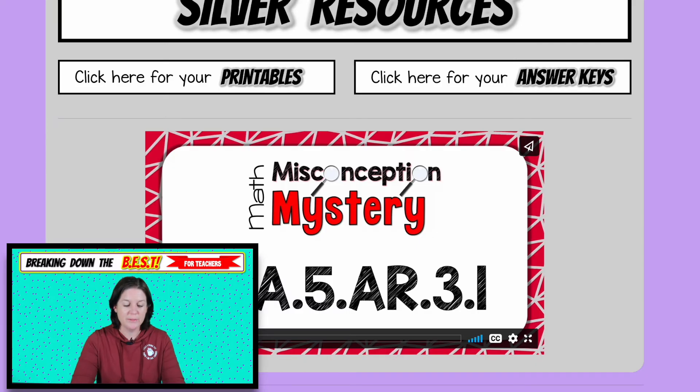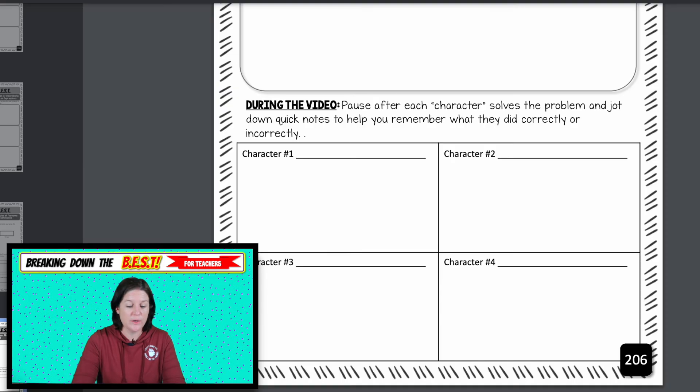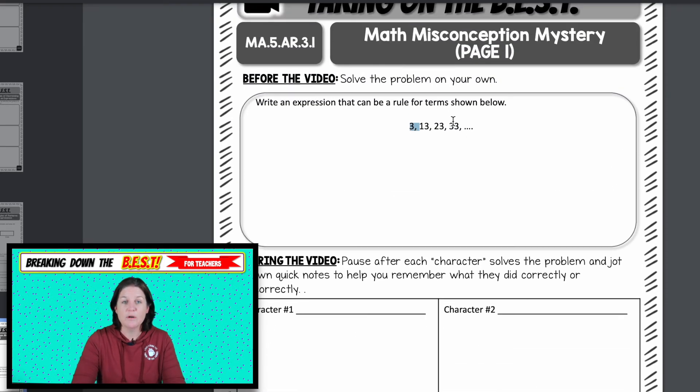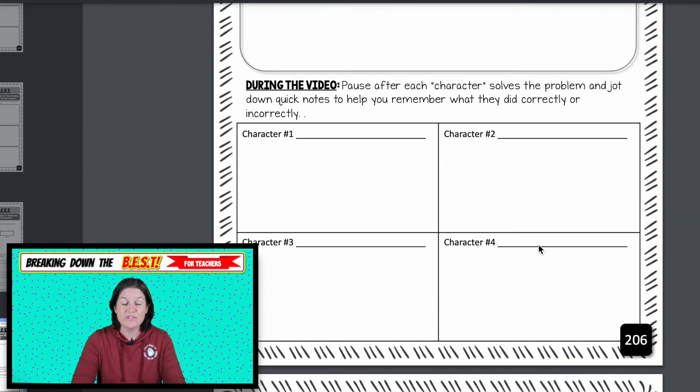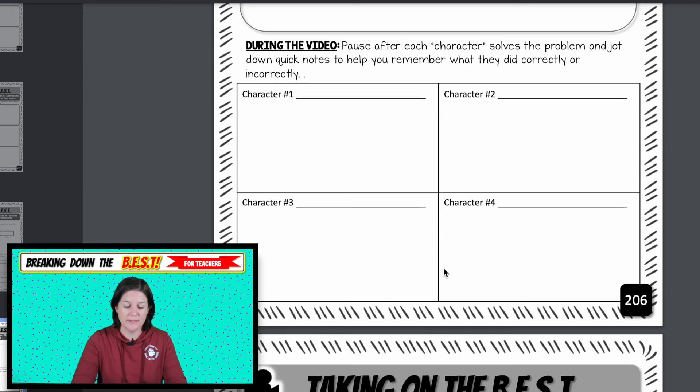Okay, but basically you just click play and I'll walk them through it. I'll say, okay, go ahead and pause the video, solve the problem on your own. Then after they solve the problem, they will watch as four characters solve that same problem. Three of them will make a mistake that students commonly make. And only one student will solve it correctly. One character will solve it correctly.